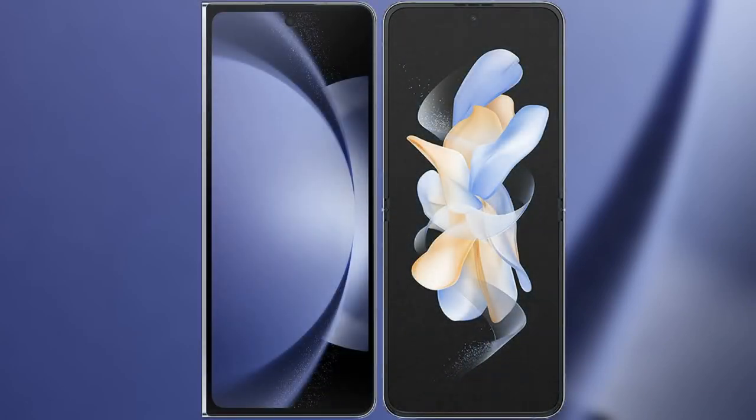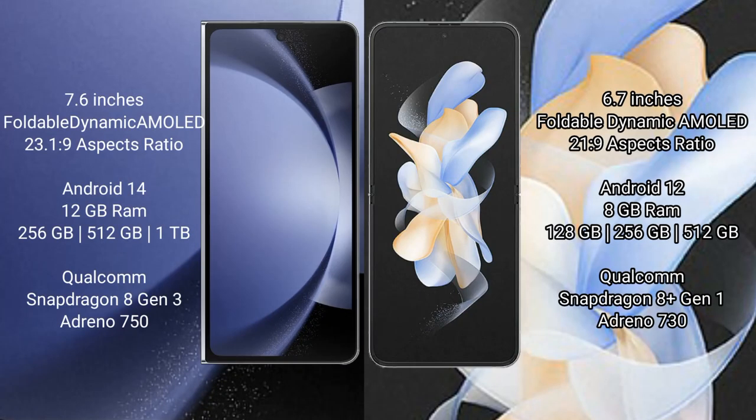I will compare the new Samsung Galaxy Z Fold 6 with Samsung Galaxy Z Flip 4. The Samsung Galaxy Z Fold 6 comes with a 7.6-inch foldable dynamic AMOLED display with an aspect ratio of 23:1 to 9. The Samsung Galaxy Z Flip 4 has a 6.7-inch foldable dynamic AMOLED display with an aspect ratio of 21:9.